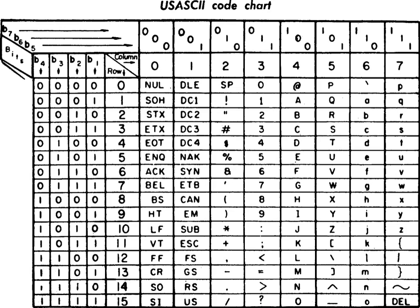Compared to earlier telegraph codes, the proposed Bell Code and ASCII were both ordered for more convenient sorting of lists, and added features for devices other than teleprinters. Originally based on the English alphabet, ASCII encodes 128 specified characters into 7-bit integers, as shown by the ASCII chart.